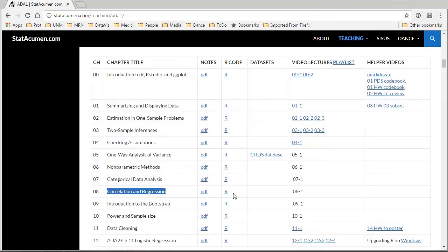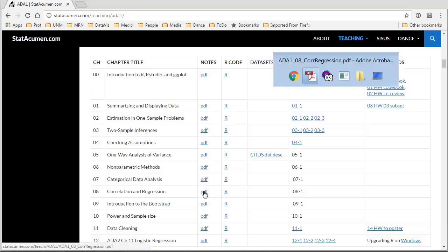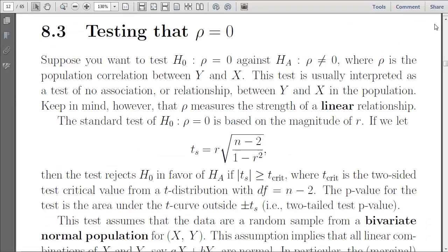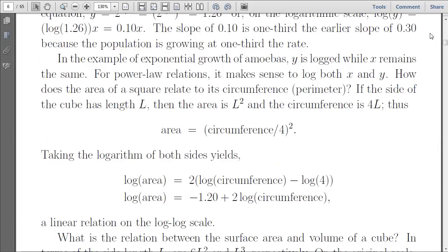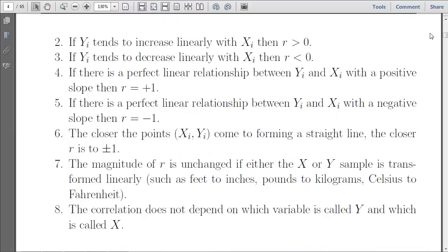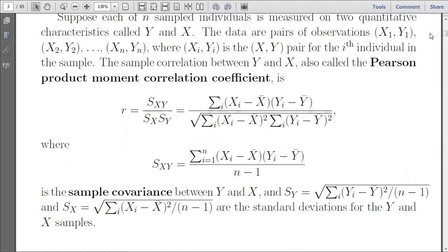So here we are at Chapter 8. Please download the R code and run it along as you're reading the lecture notes and following along. In the last video at the beginning we talked about the correlation coefficient. In fact, if I scroll up there for a moment, we discussed estimating the correlation coefficient using the covariance and standard deviations of both the x and y data.